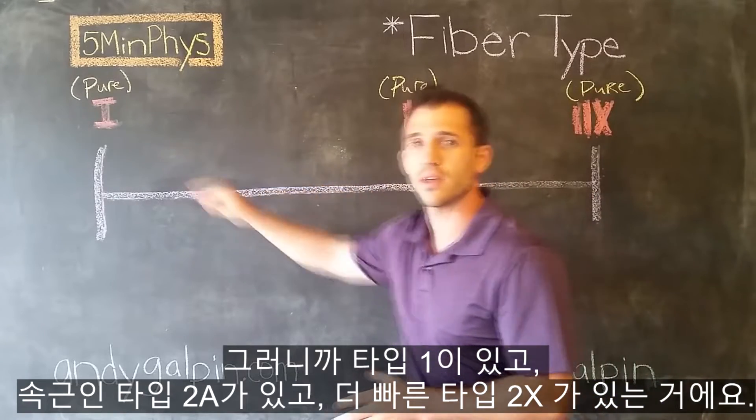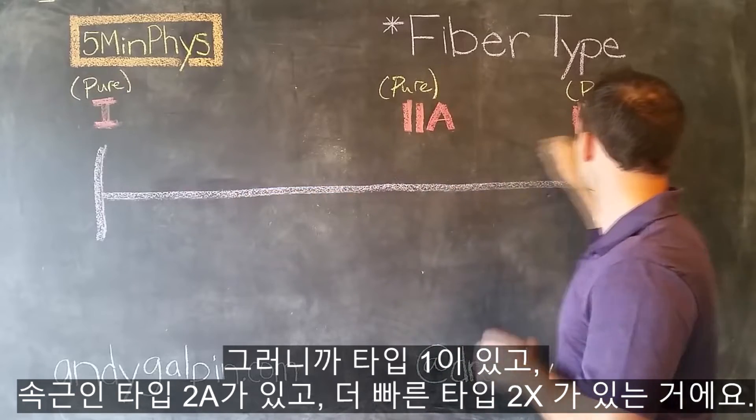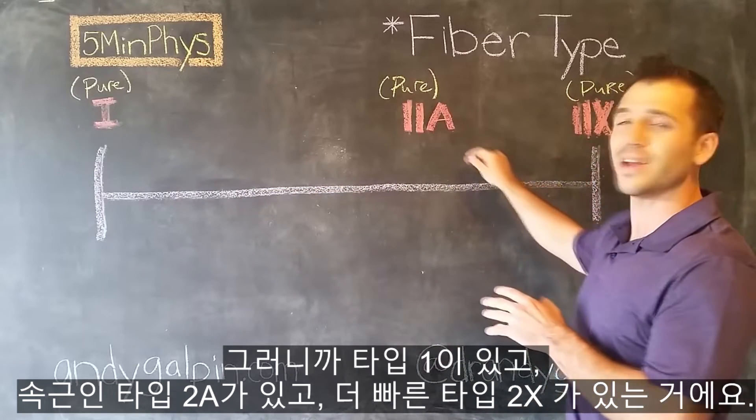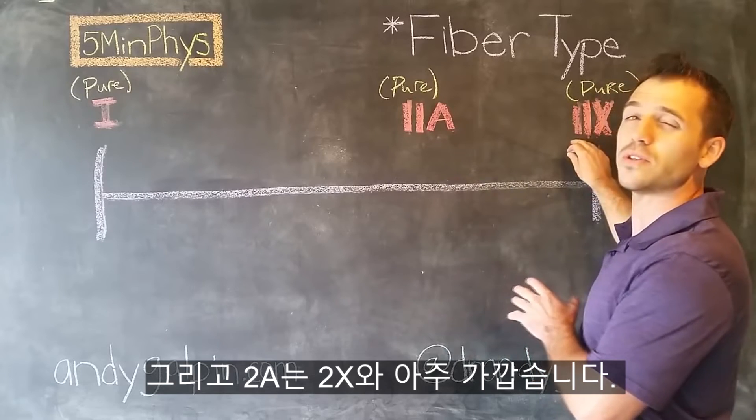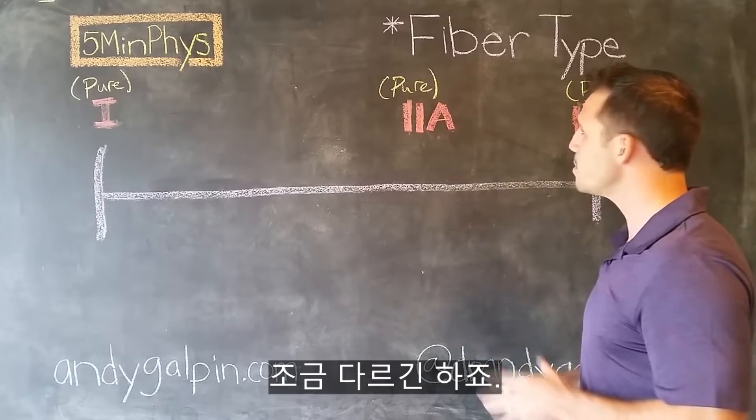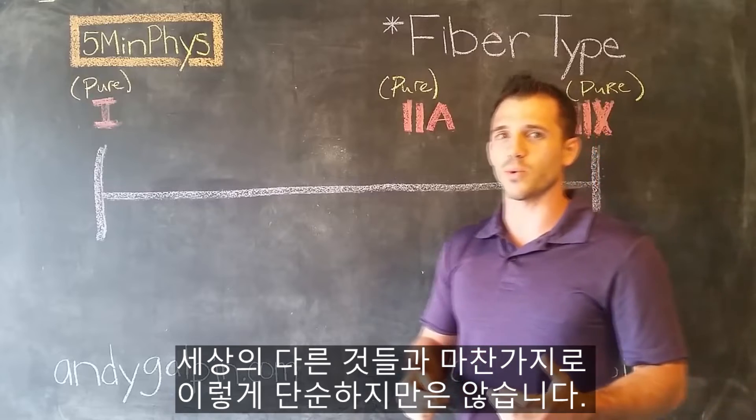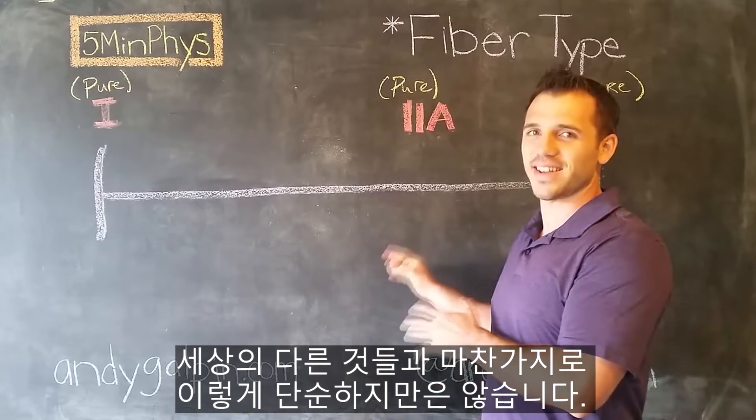So you have type 1s, type 2As which are fast twitch, and type 2Xs which are really fast twitch, and the 2As are pretty close to the 2Xs. A little bit different. Now just like in the rest of the world, it's not quite that easy.